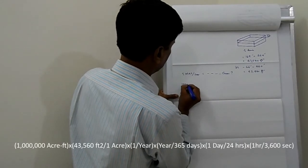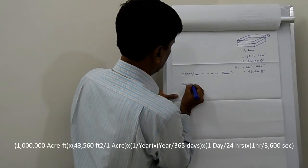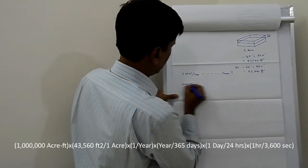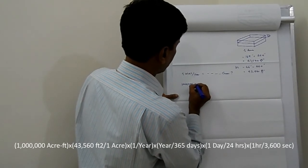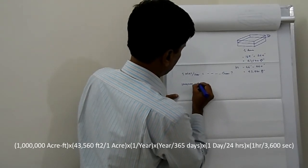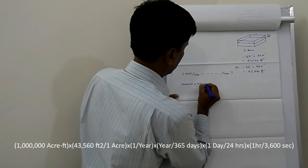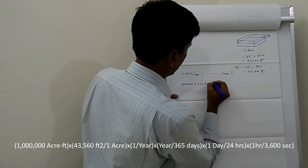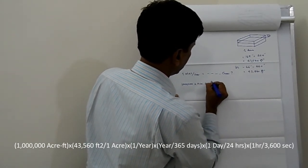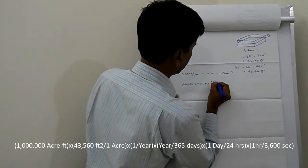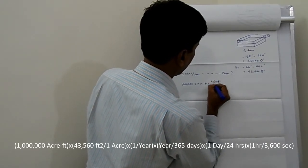So 1 million, 1,000,000 acre feet, and 1 acre is equal to 43,560 feet square.